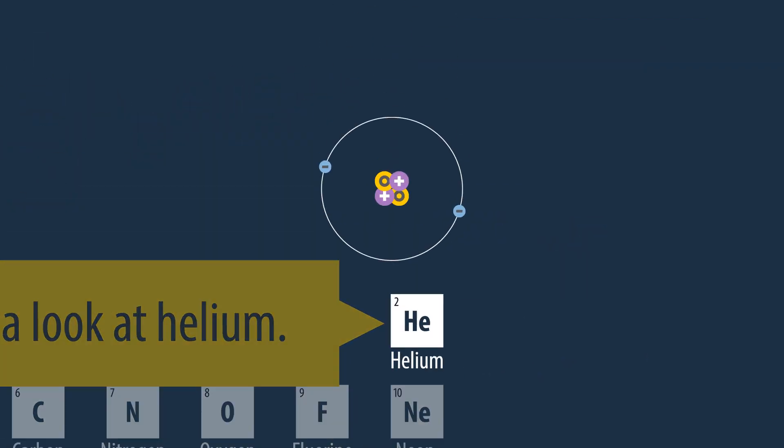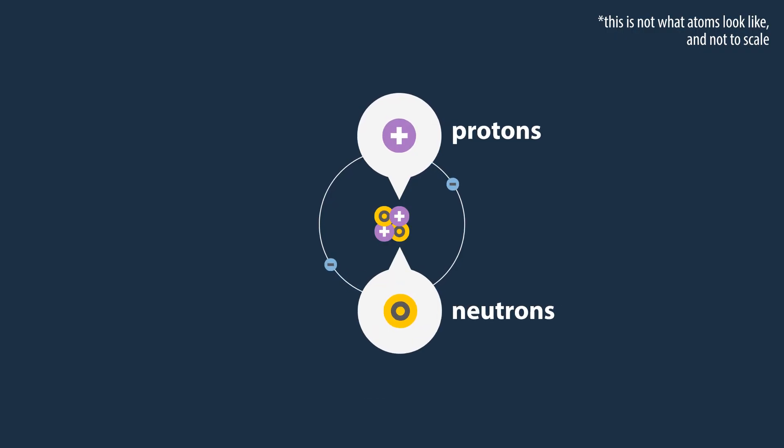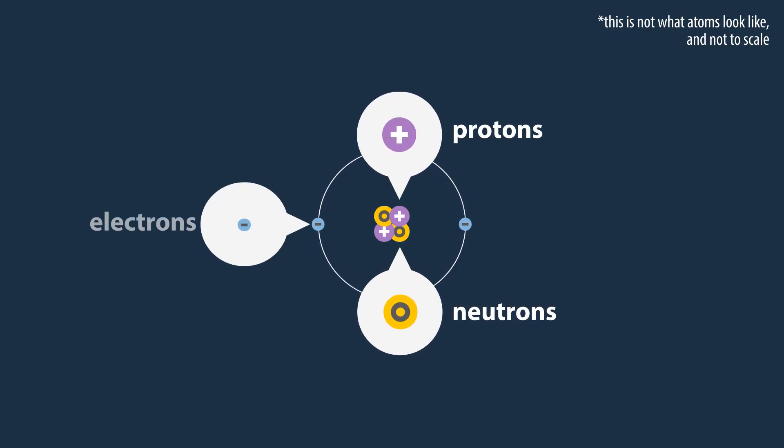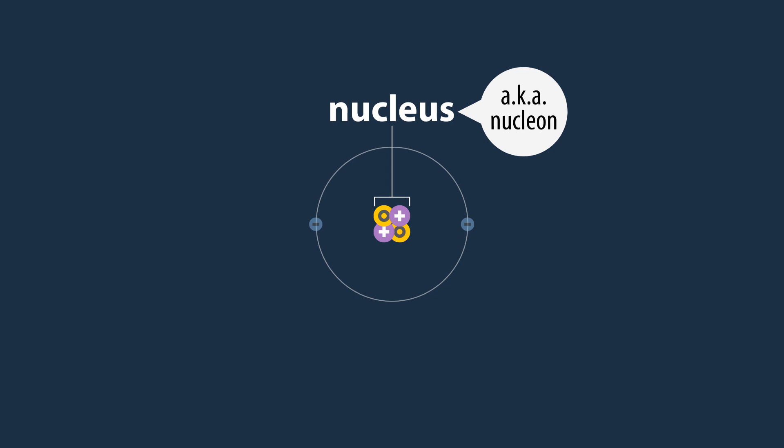Every atom has three parts. Protons, which have a positive charge. Neutrons, without a charge or neutral. And electrons, which are negatively charged. The core or nucleus is always formed by protons and neutrons.